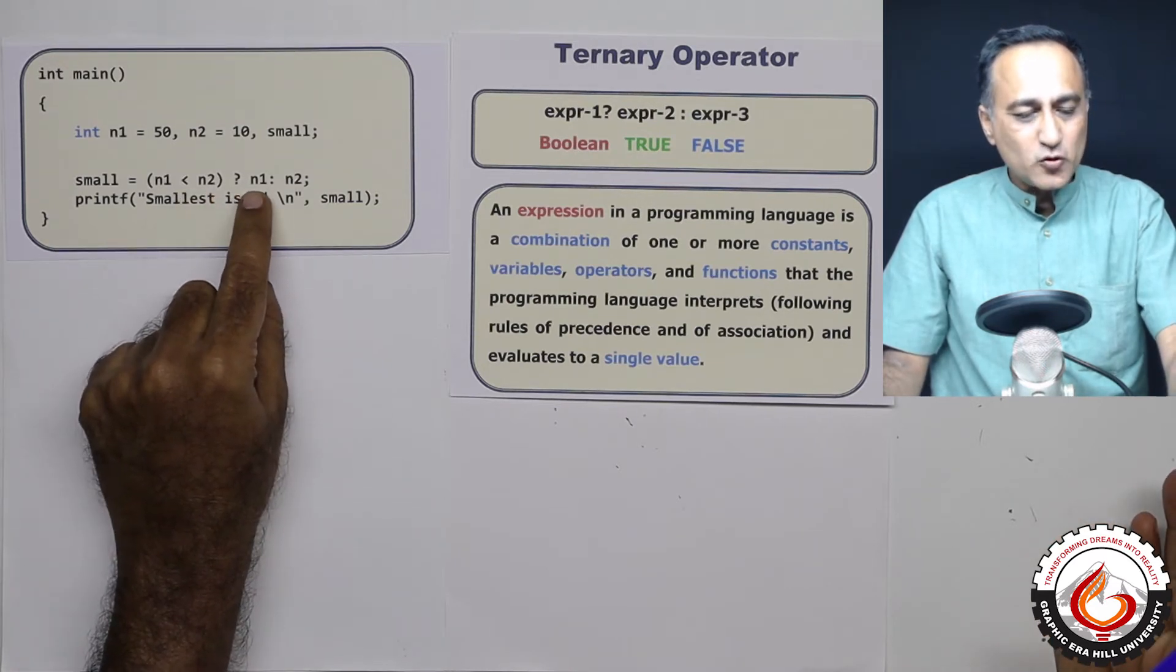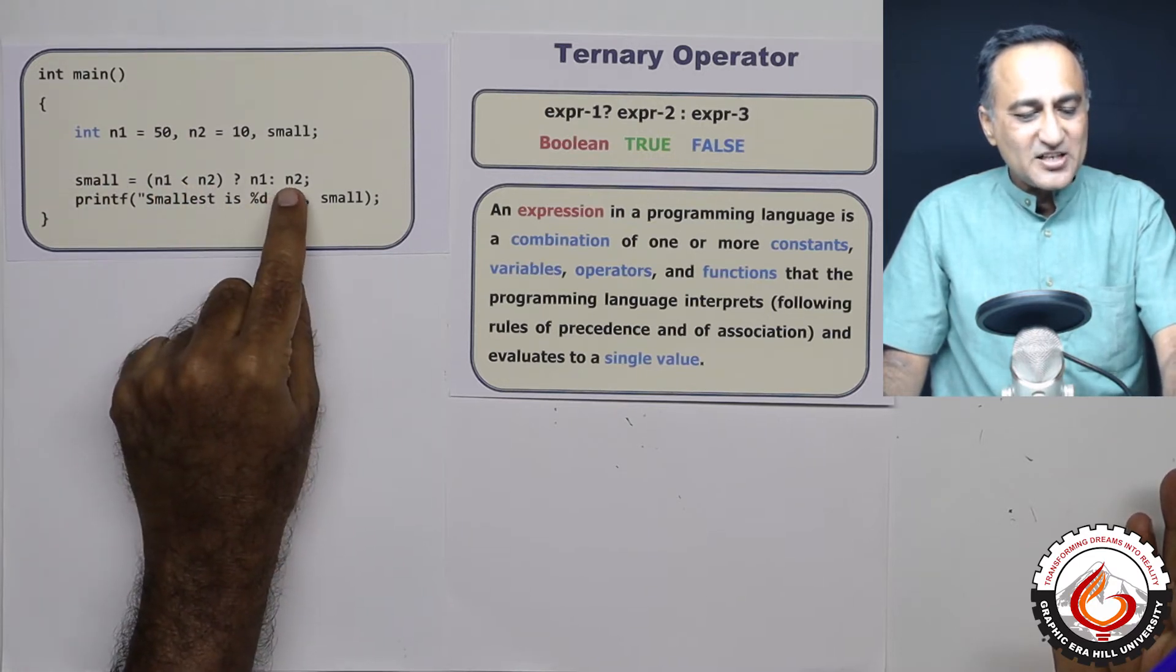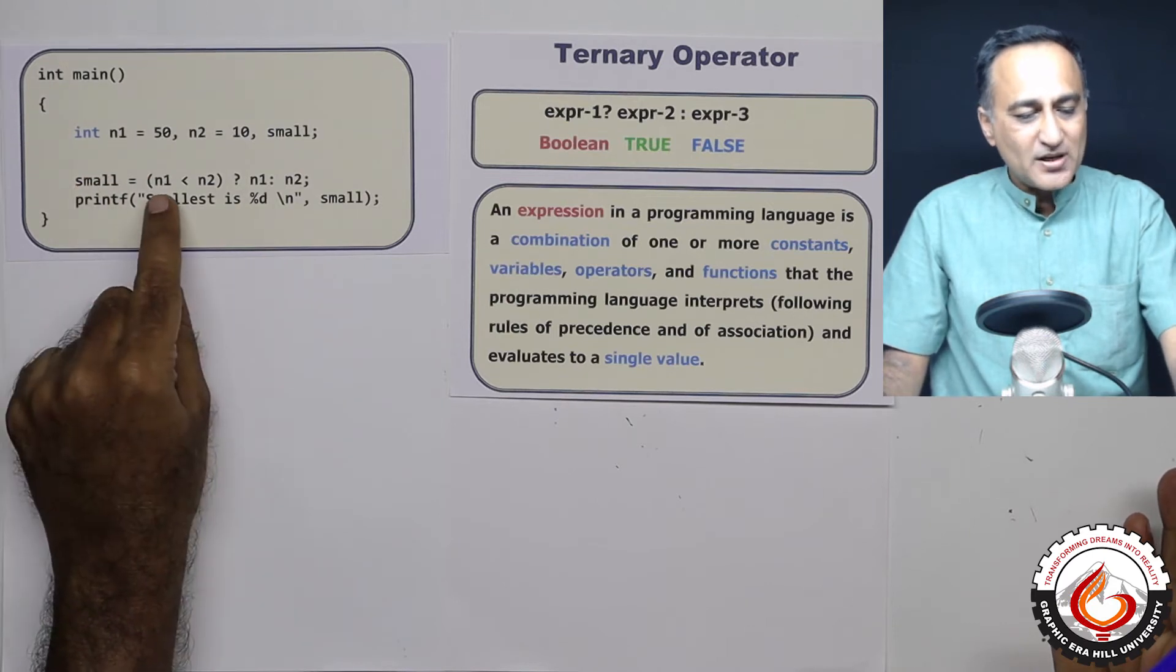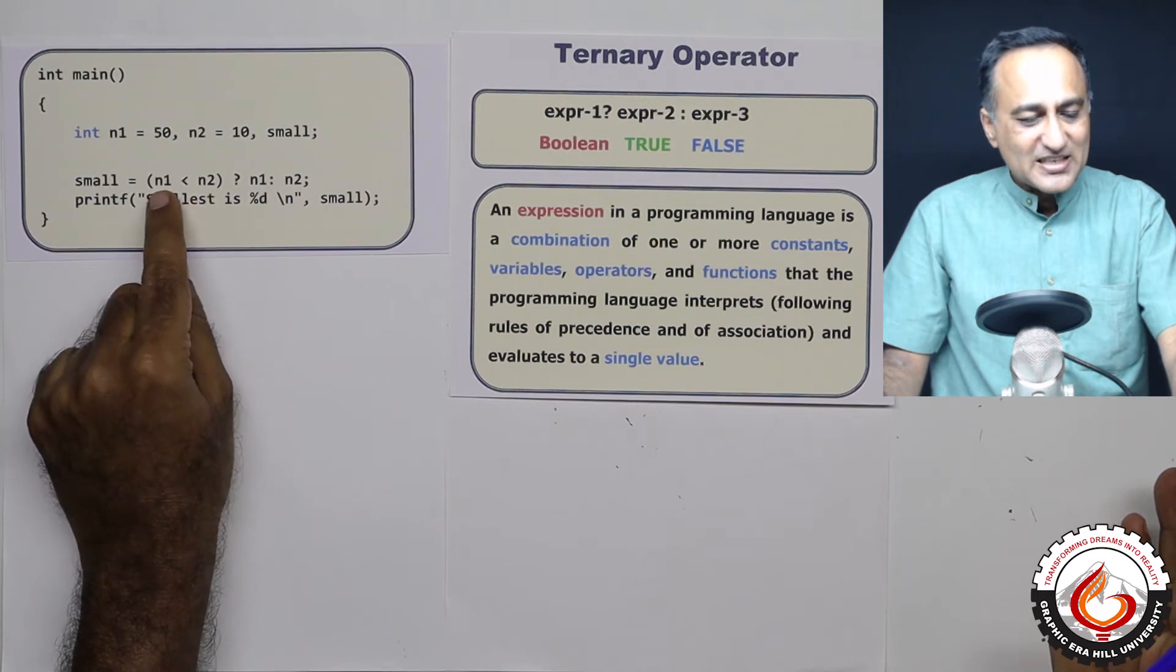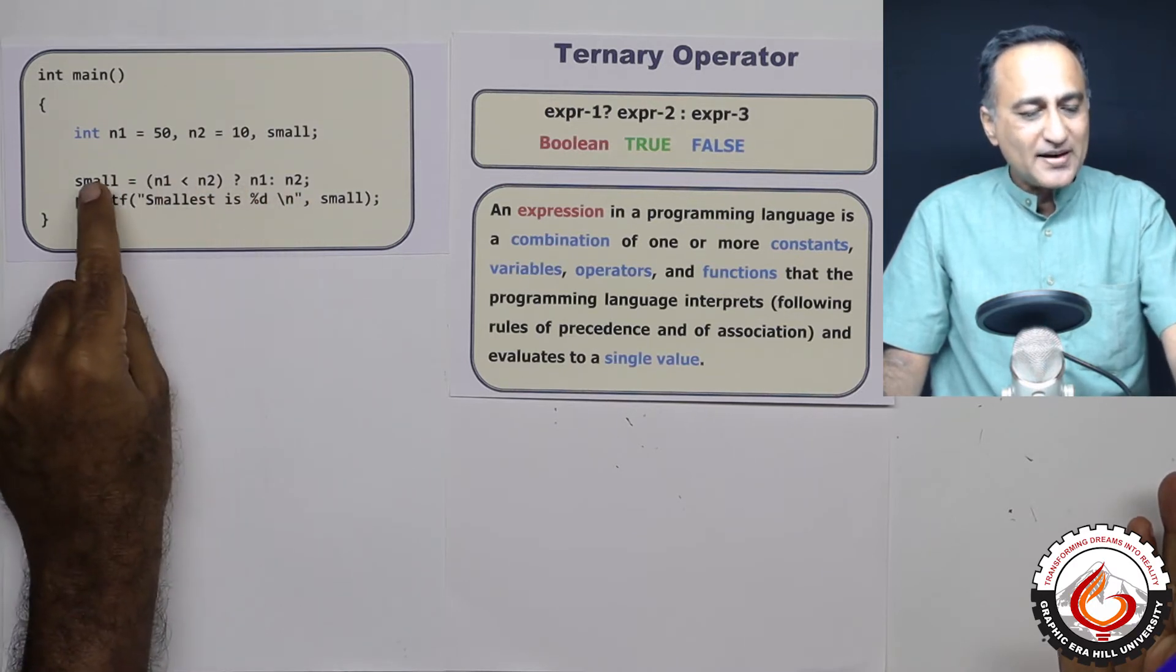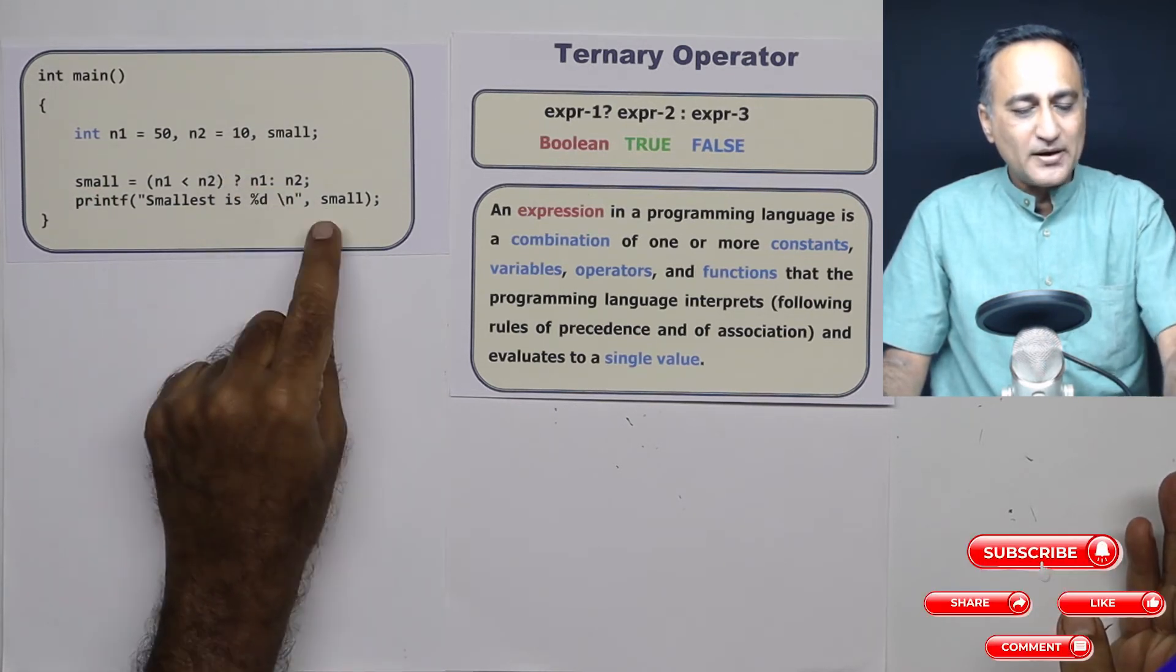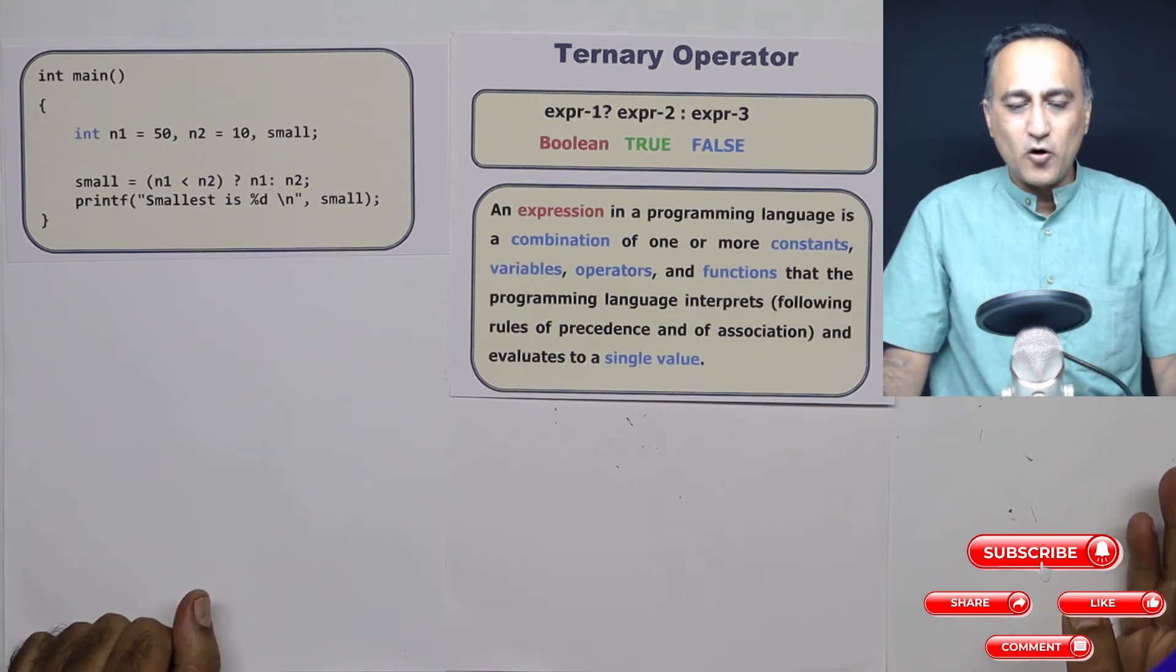So in case the condition is true, the value of n1 will go to small. In case the condition is false, the value of n2 will go to small. So here n1 happens to be 50, n2 happens to be 10. Is 50 less than 10? It is false. So it will go to n2. So n2 will get assigned to small, n2 happens to be 10. So when I print smallest is percentage d small, it's going to print the value 10 on the output. So this is the working of a ternary operator.